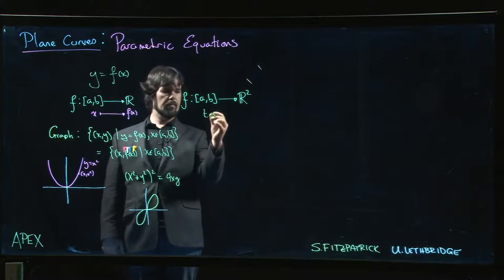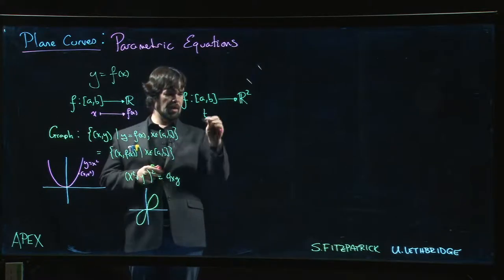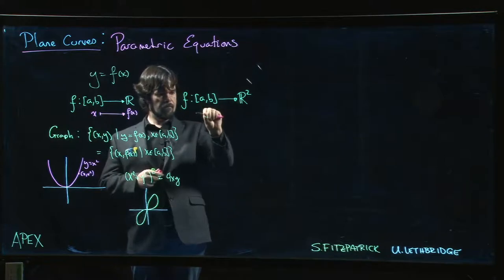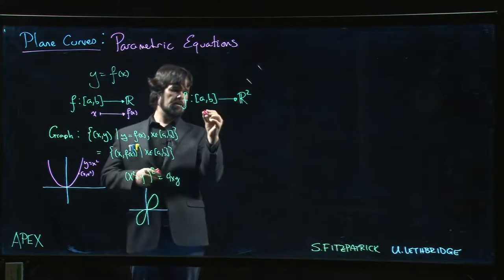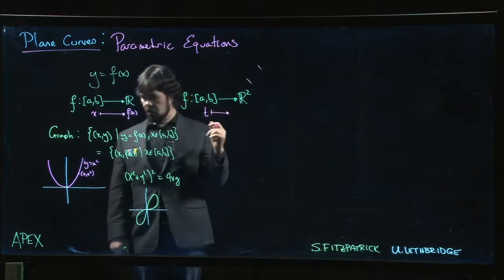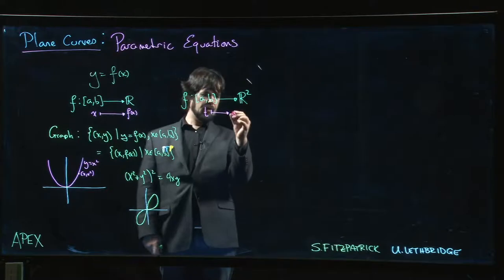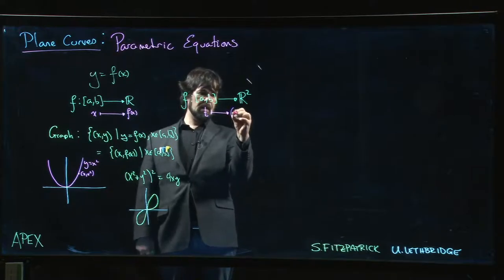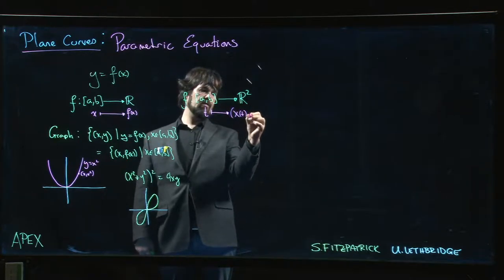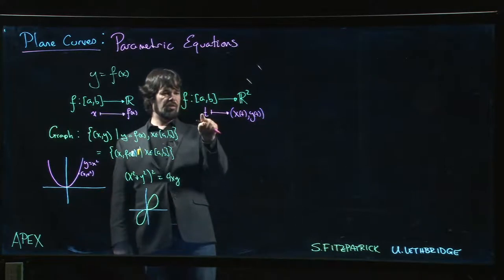So now what's going to happen is the input for our function is going to be some real number T. So let me try to be consistent with what we had over here, so T. And T is going to go now, not to just a single y-coordinate like we do for graphs, it's going to go to an ordered pair x of T, y of T.